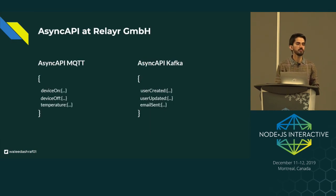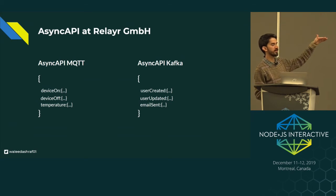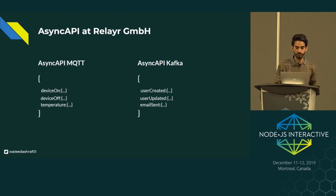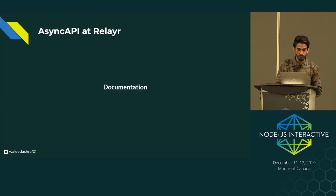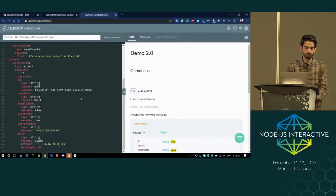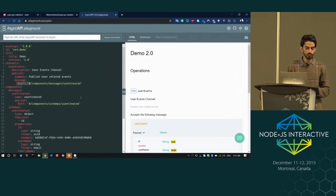With AsyncAPI, we created two documents — one for MQTT and one for Kafka messages — and we defined all of our events, just like I showed you: device on, off, temperature, and for internal communications, user created, user updated, user deleted, and so on. This solved our problem for documentation because it gives you a nice view, and it also generates an output file which you can easily share.